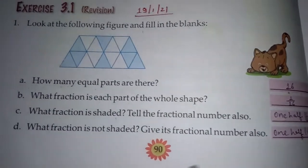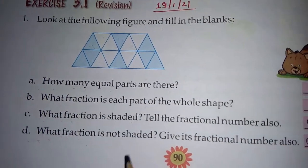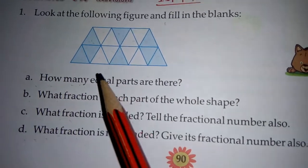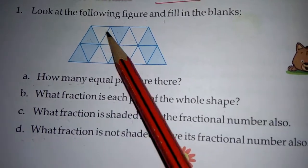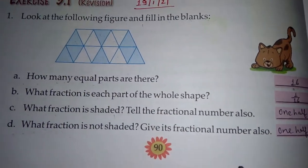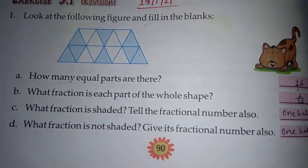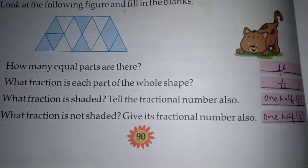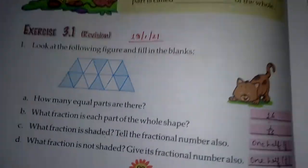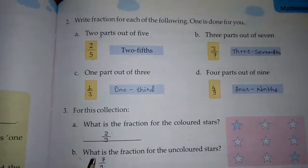Next, question D: what fraction is not shaded? Give its fraction number also. Count karo kitne unshaded hain: 1, 2, 3, 4, 5, 6, 7, 8 — 8 unshaded hain. Total 16 hain. So 8 unshaded out of 16 total — it means half. That's why we write here one half, that is 1 by 2.